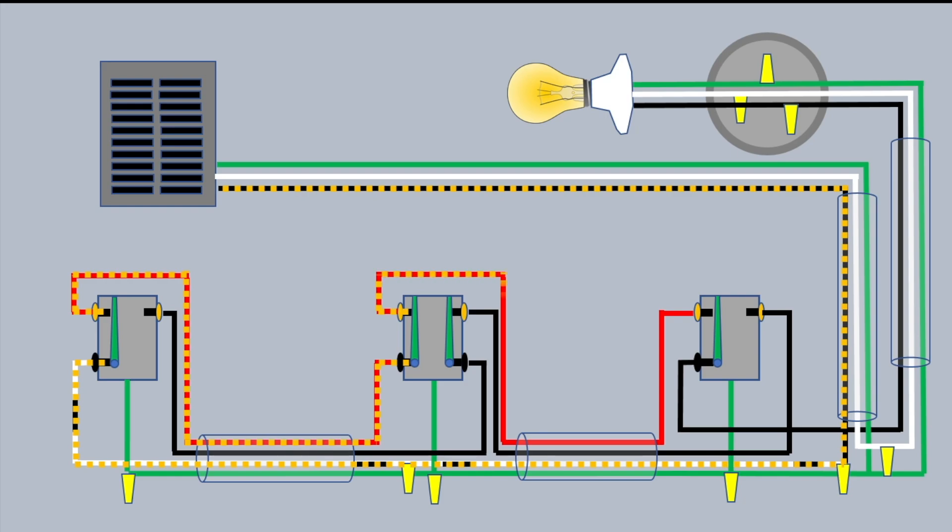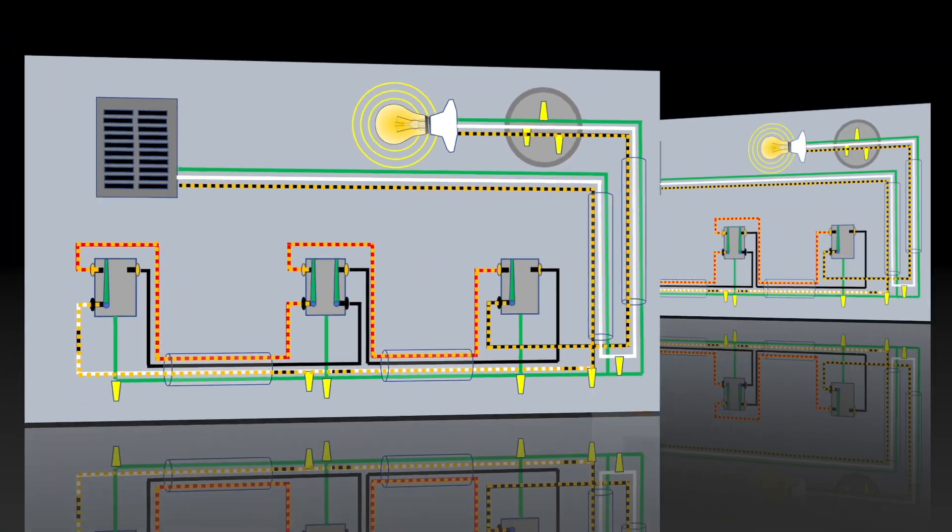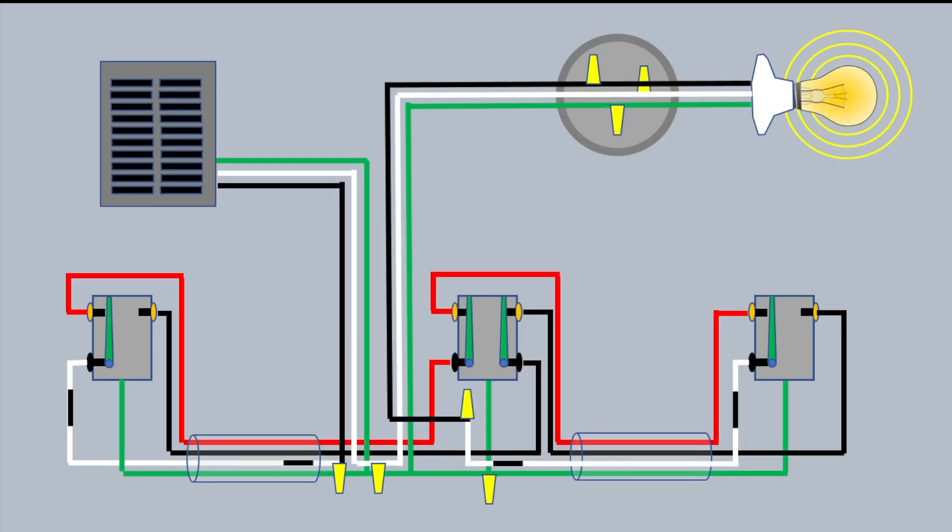And again, the black and red wires become the travelers between the two three-way switches on each end, and the four-way switch in the middle, and you can see as it works its way out of that third switch, it goes back up the black wire to the light. And just as the other setup, this works the same way. You switch any of these switches anyway, and that light will come off and on.